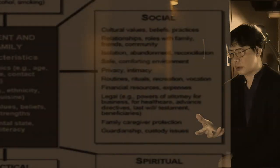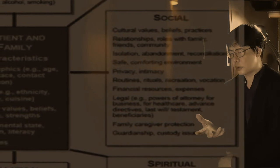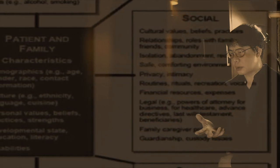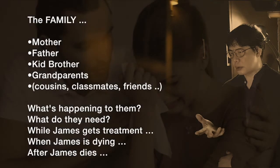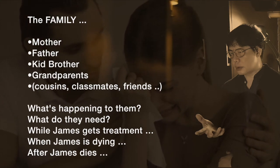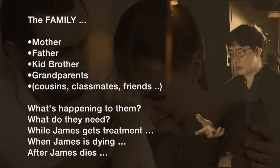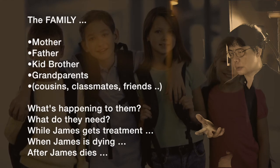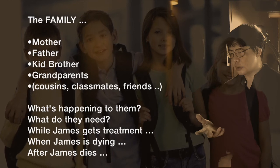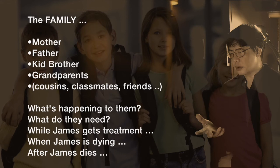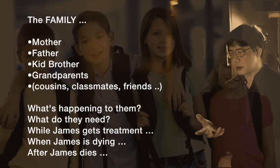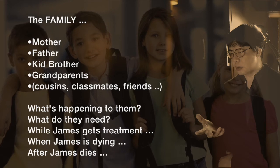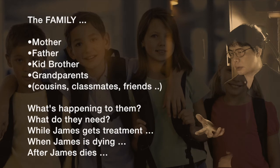The social box contains cultural values, beliefs, isolation, abandonment, intimacy, rituals, and financial resources. Most importantly, it covers the family's psycho-social needs. James has a mom, dad, kid brother, grandparents, classmates, friends, and cousins — all affected by his illness. Comprehensive palliative care even suggests talking to the patient's classmates, especially when a patient is terminal or has died. You care for the people who will be affected during treatment, while James is dying, and after James dies.